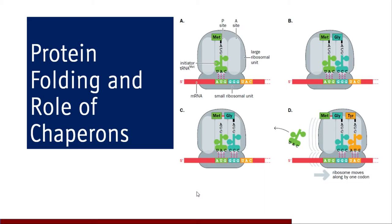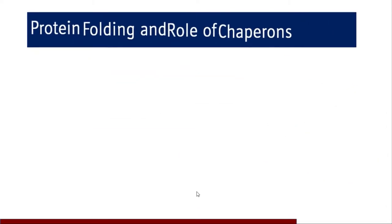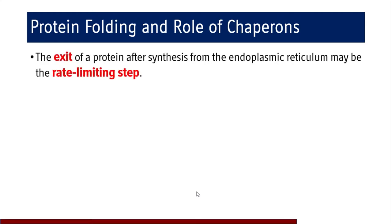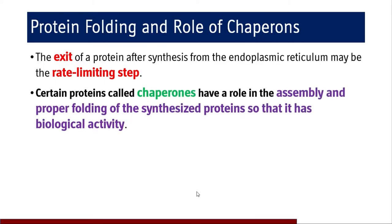What is protein folding, what is the role of chaperones in protein folding, and what are the disorders which may result due to misfolding of proteins? After proteins are translated and synthesized, they will have a primary structure only. Most proteins, unless they get the quaternary structure, are not functional. The exit of a protein after synthesis from the endoplasmic reticulum may be a rate-limiting step — if proteins are not properly folded, they won't be released from the ER.